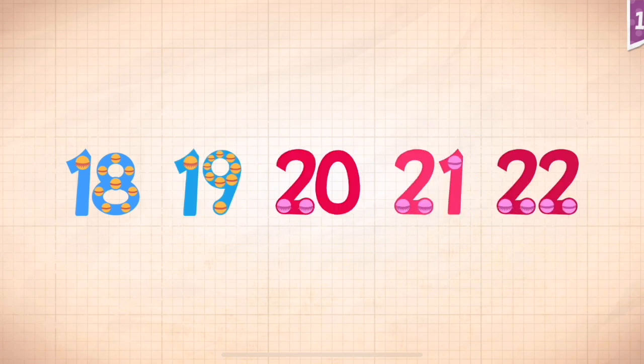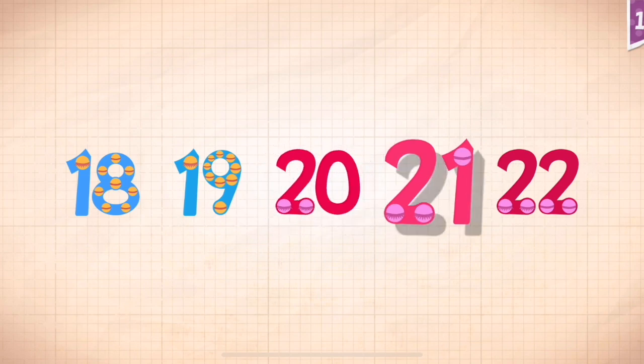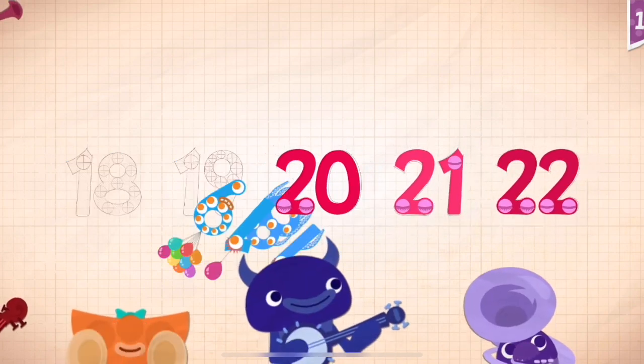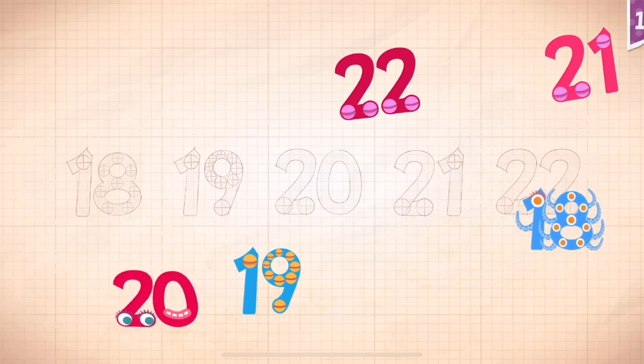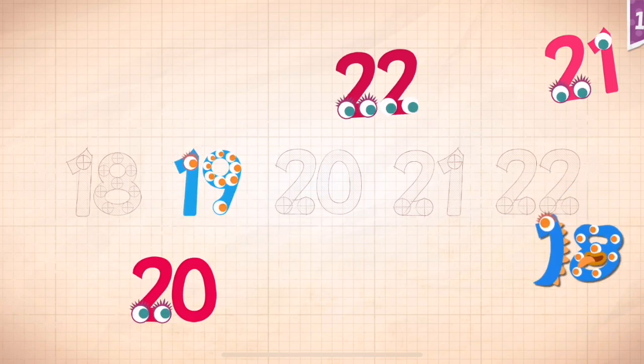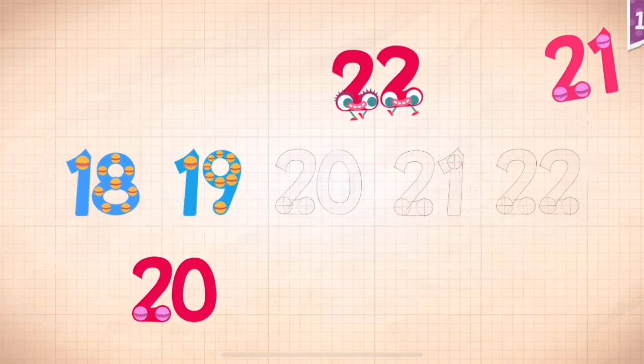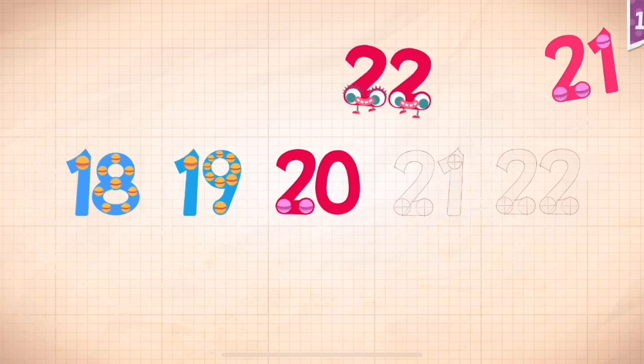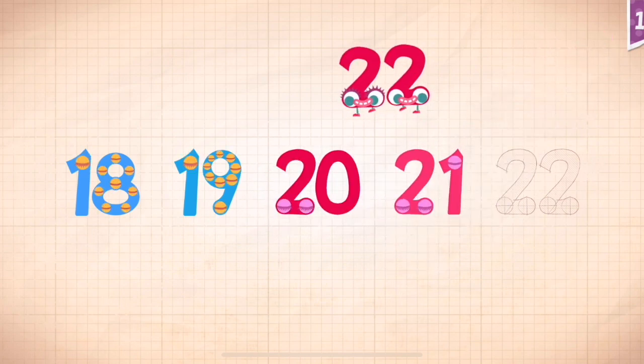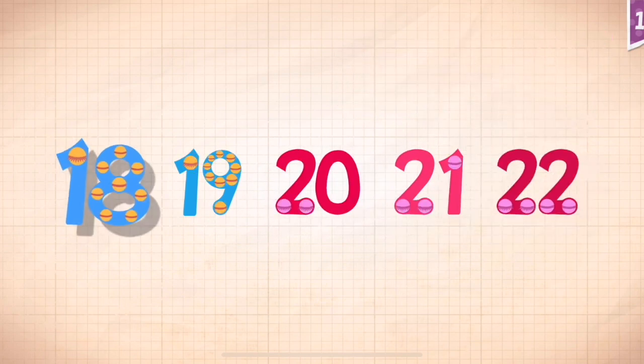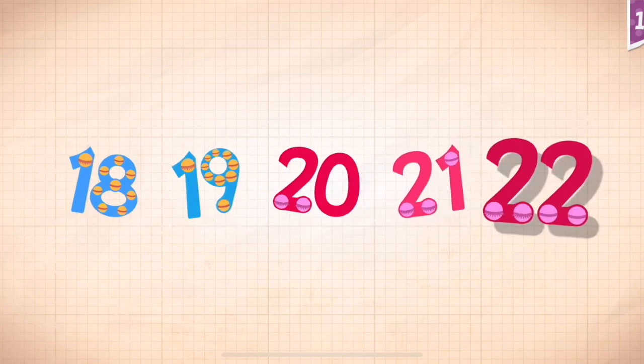Count by ones starting at 18. 18, 19, 20, 21, 22. 18, 19, 20, 21, 22. 18, 19, 20, 21, 22.